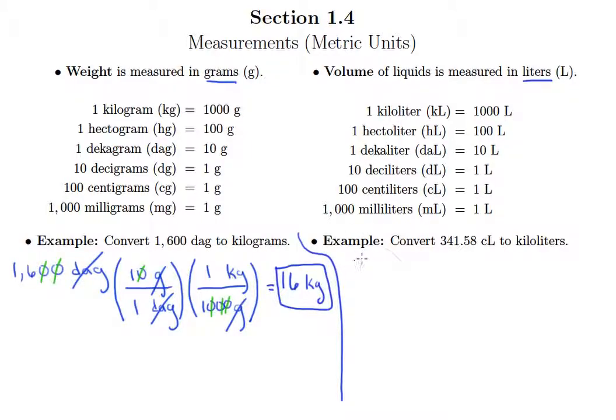We want to convert 341.58 centiliters to kiloliters. So 341.58 centiliters. And we want to turn this into kiloliters. Well, centiliters relate to liters by saying that there are 100 centiliters in one liter. So 100 centiliters goes on bottom, so the centiliters will cancel. One liter goes on top. Let me cancel out my centiliters.